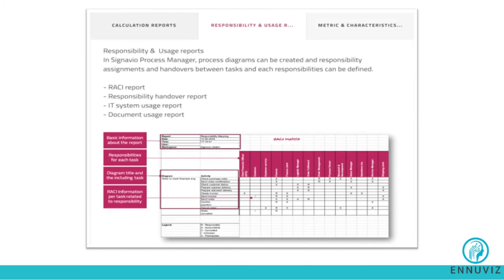The second segment of reporting is responsibility and usage reports. Process diagrams can be created with responsibility assignments and handovers between tasks, and each responsibility can be defined as well. Management can download RACI reports, responsibility handover reports, IT system usage reports, and document research reports.